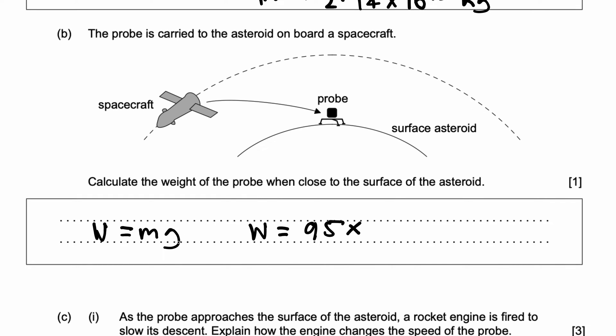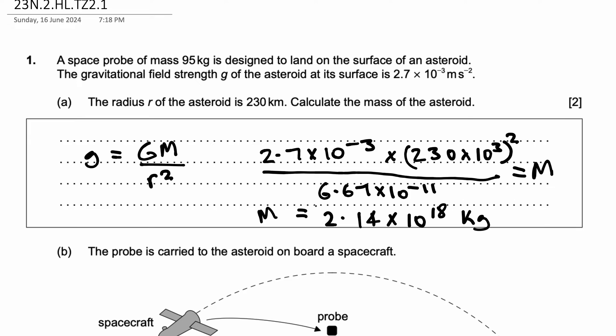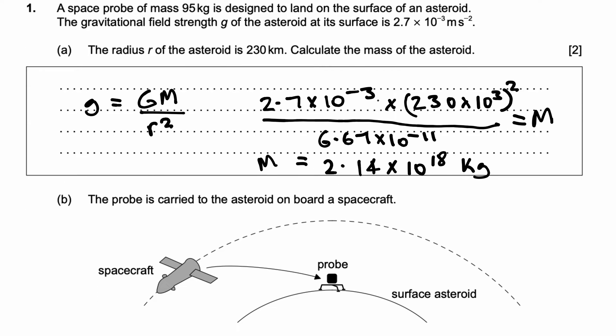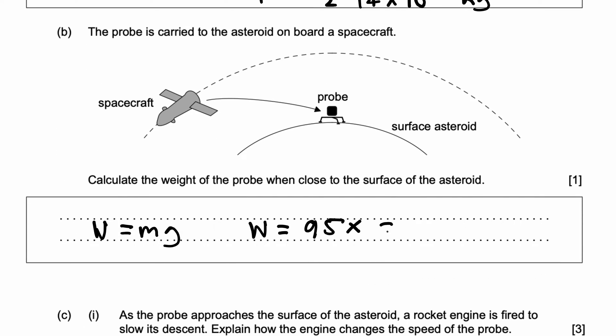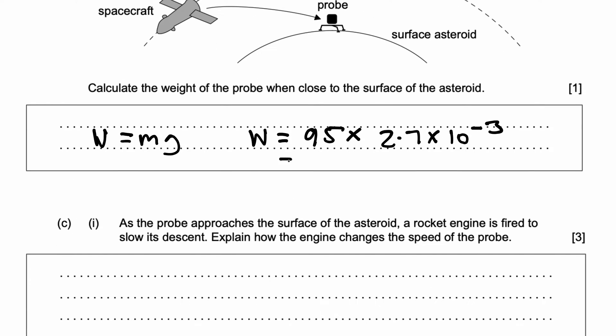But in this case, we're using the gravitational field strength of this asteroid, which is 2.7 × 10^-3. And so, if I put this on my calculator, what do I get? You get 0.26 newtons.